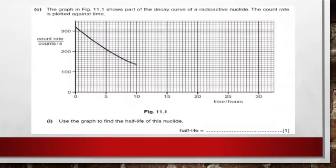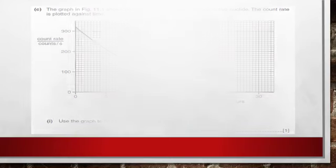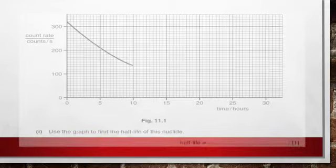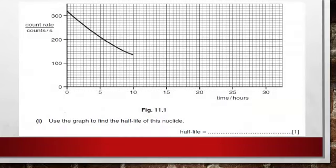The graph shows part of the decay curve of a radioactive nuclide. The count rate is plotted against time. Use the graph to find the half-life of this nuclide. The graph shows that it starts at the count of 320. The half of 320 is 160.